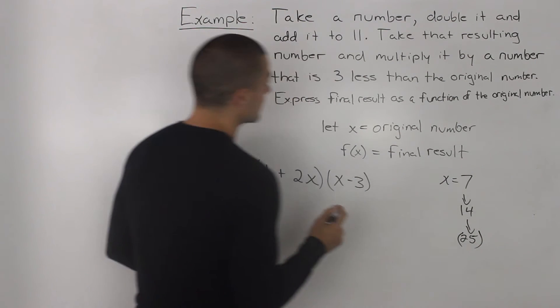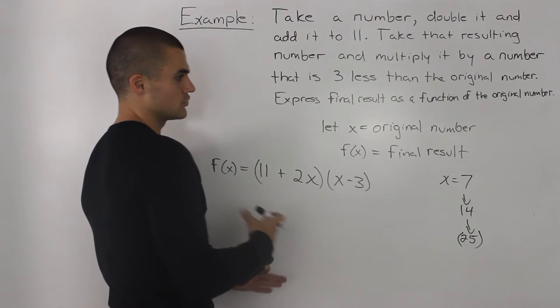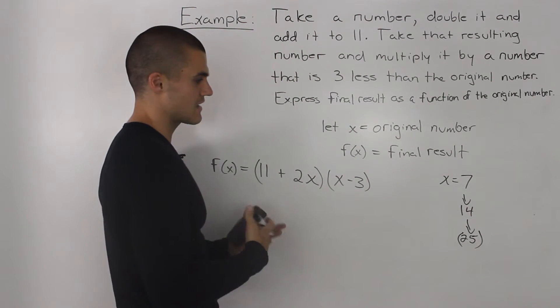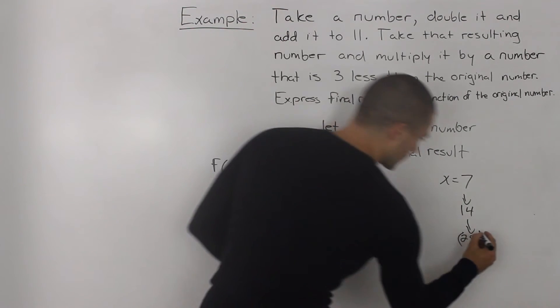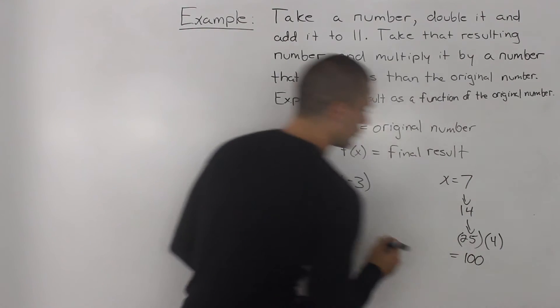And then we take that resulting number, 25, and multiply it by a number that is 3 less than the original number. So, our original number is 7. 3 less than 7 is 4. So, we take the 25 and multiply it by 4, and we end up getting a value of 100.